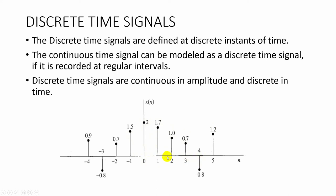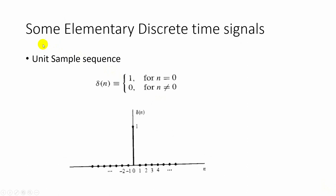Discrete time signals are represented by x(n). Continuous time signals are represented by x(t). We studied about elementary discrete time signals already. They are: unit sample sequence or unit impulse sequence, where δ(n) is equal to 1 if n is equal to 0, and equal to 0 when n is not equal to 0.